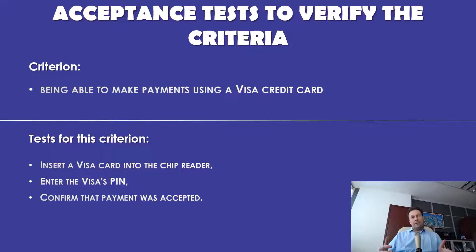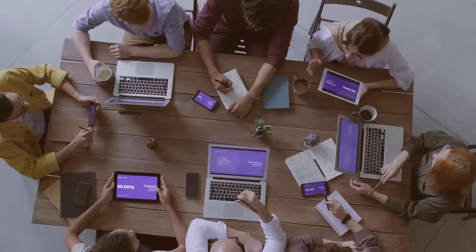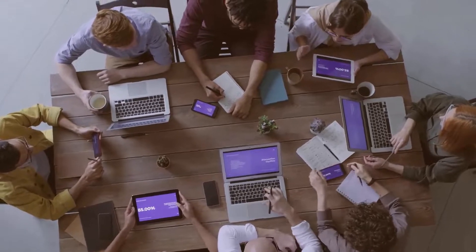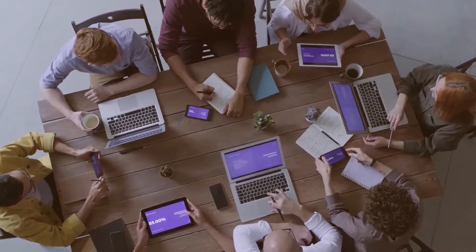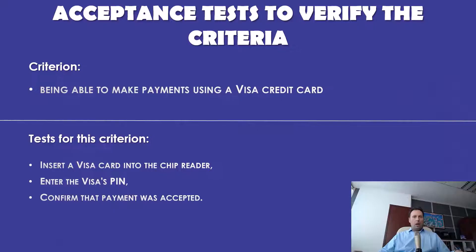If the acceptance tests are passed for all the user story's acceptance criteria, then the user story is successfully acceptance tested. By listing acceptance criteria, you are giving your developers a frame of reference for how the story should be broken down into developer tasks and eventually finished. When your acceptance criteria and tests are written alongside the user story, you are making sure that the functionality you want to implement can have its implementation verified.